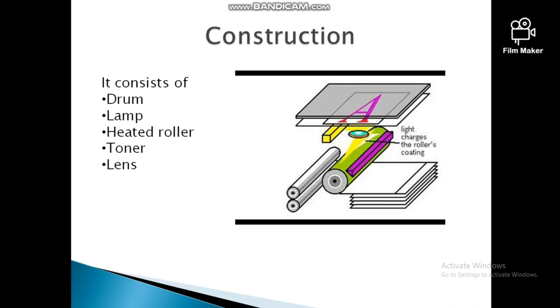The sheet of paper on which the document is to be copied passes through a heated roller, also called heated pressure roller, which melts the toner into the paper to produce a permanent impression of the document.